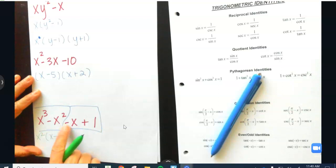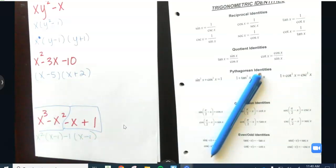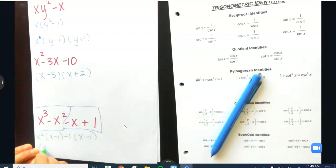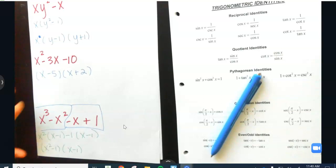We are going to have X squared minus 1 from these two and X minus 1 from the matching pair right there. That is not completely factored, this is a difference of two squares. This turns into X minus 1 times X plus 1.